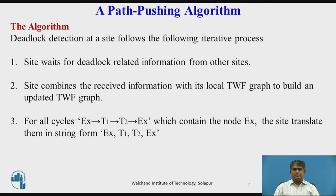For all cycles EX → T1 → T2 → EX which contain node EX, the site translates them into a string from EX, T1, T2, EX, and sends it to all other sites where a sub-transaction of T2 is waiting to receive a message from the sub-transaction of T2 at this site.